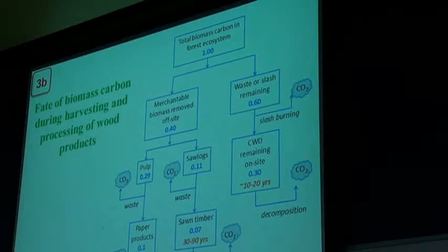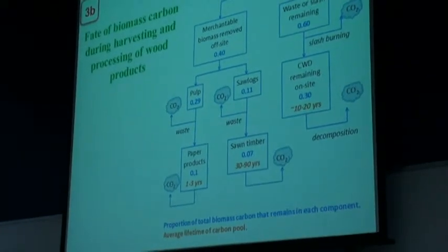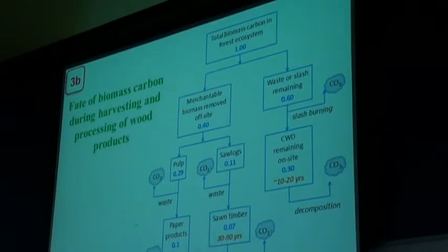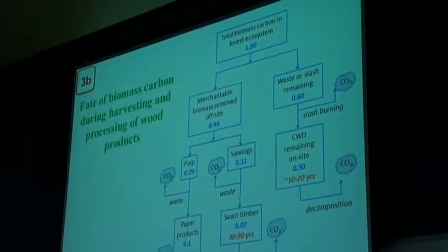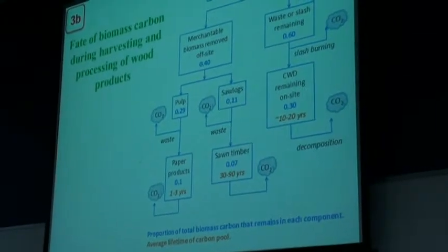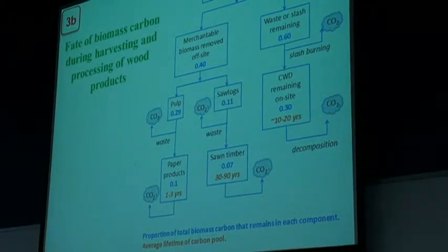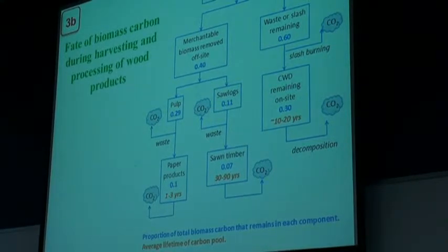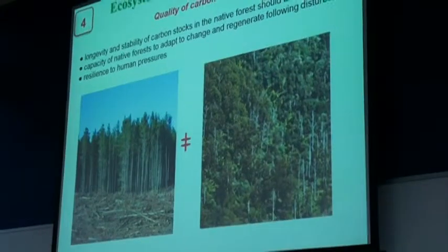This diagram shows where the losses of carbon are in a harvesting system. Starting with 100% of carbon in biomass—not accounting for soil losses—the forest is harvested. A large proportion is waste material. Only 40% goes into merchantable products. Of that 40%, only 11% goes into sawlogs and the remaining into pulp. At each stage, CO2 is being emitted from either combustion or decomposition of waste material.